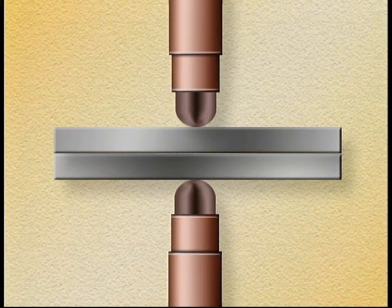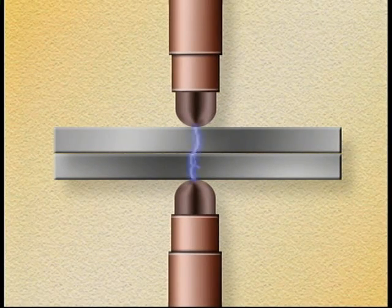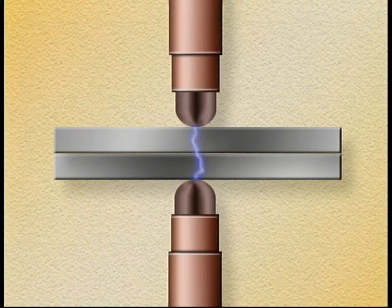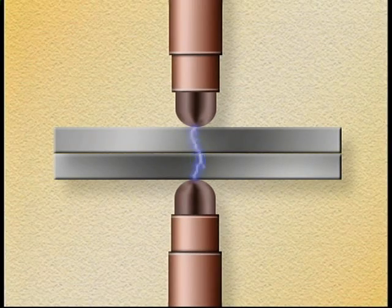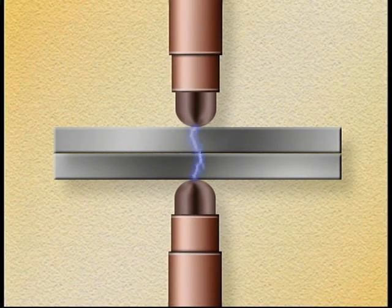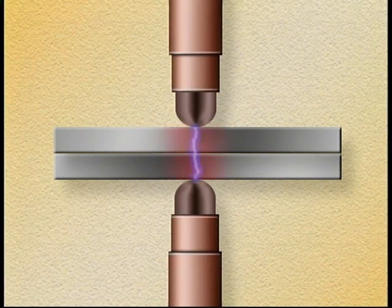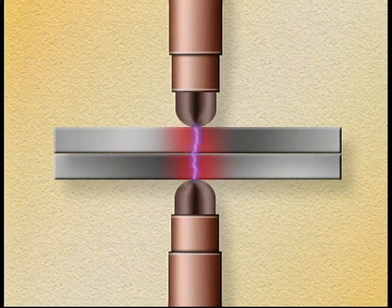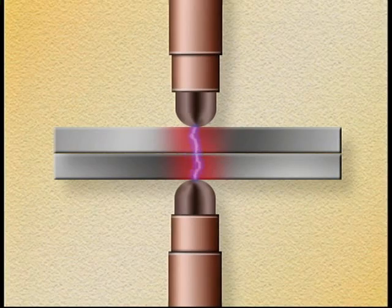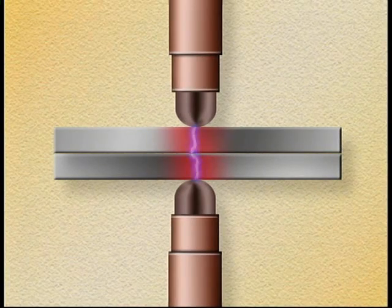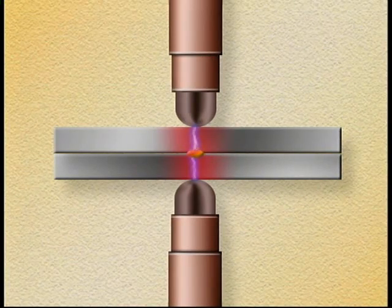While the parts are held together, a low voltage, high amperage electric current is passed between the electrodes. As this current passes through the pieces to be joined, it encounters resistance producing heat. Electrical resistance is greatest at the faying surface where the pieces of metal meet, so that is where the most heat is generally produced. This is where the weld nugget forms.